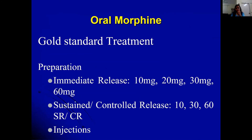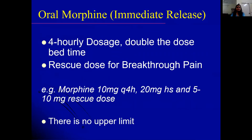Oral morphine remains the gold standard treatment for severe chronic persistent pain globally. Many may not be familiar with using oral morphine, but it is the drug of choice. Different formulations available in India include immediate release, sustained release, and injectable forms. Injectable morphine is used only when the patient cannot take it orally, such as towards end-of-life care.